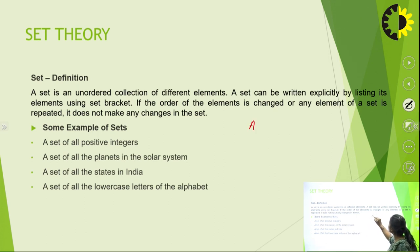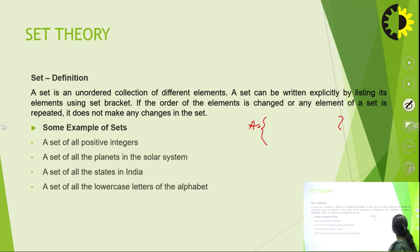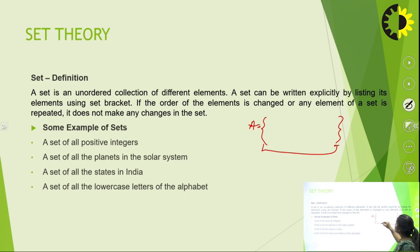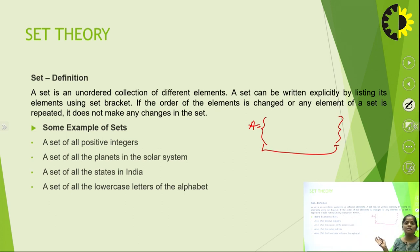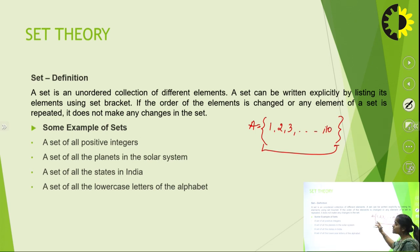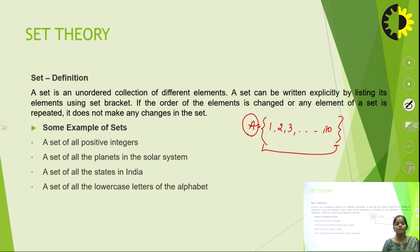For example, if I take a set of numbers, I use A — a capital alphabet — to denote it. We use curly braces to represent a set and put the different element collections inside. For example, a set which includes numbers up to 10 is represented by a capital letter A. This is the standard representation of a set in set theory.